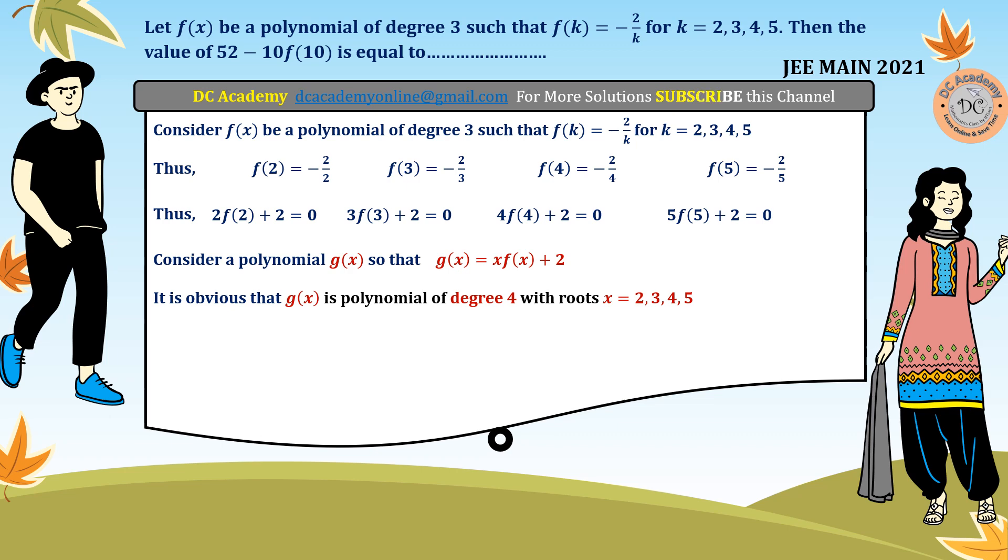So therefore we can construct a polynomial whose roots are known. So therefore you can say that g(x) is equal to lambda times x minus 2 multiplied by x minus 3, x minus 4, x minus 5. And here, lambda is a real number.